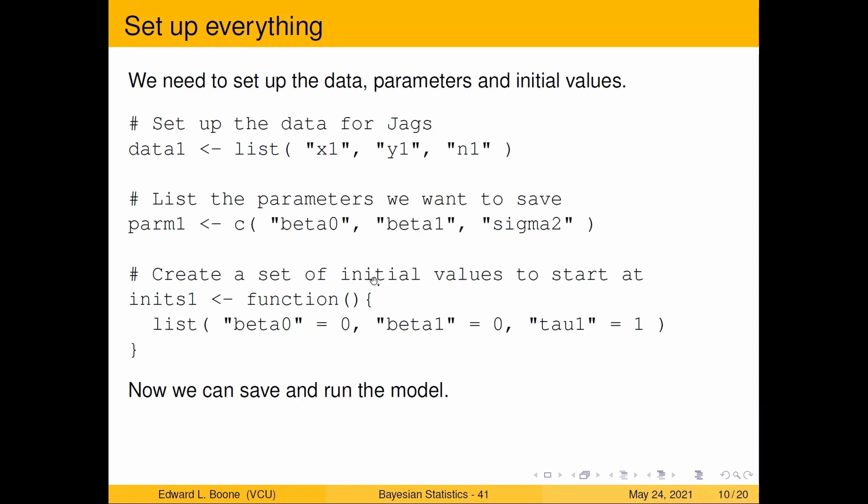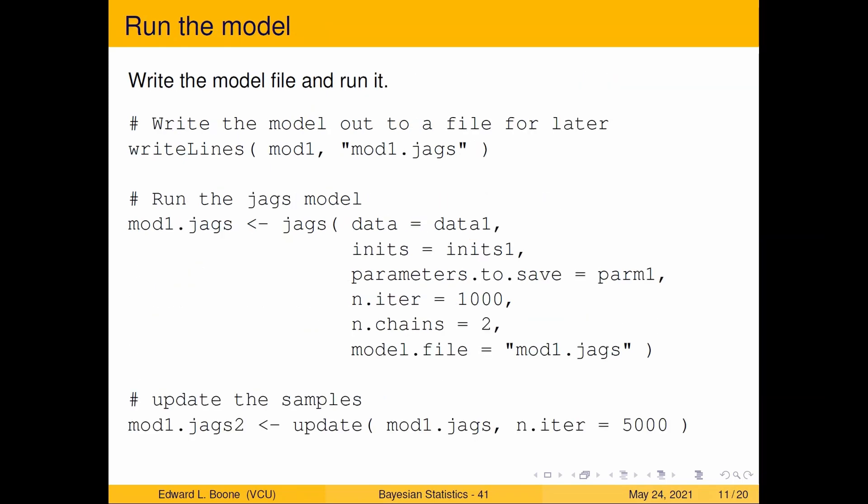We need some initial values to start at to make sure everything works right. So here we're going to set beta zero equals zero, beta one equals zero. I don't know what they're going to be. And then we have tau one and since it's a precision/variance it has to be a positive number so I just put in one. Are these the best numbers you can put in? Absolutely not, but I'm trying to show you what happens as we go through this.